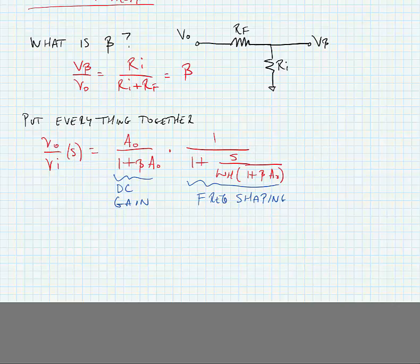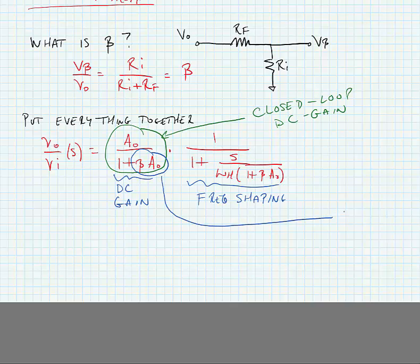From this, we can extract a couple of things. This whole DC term here is called the closed-loop DC gain. The term in the denominator, beta times A sub 0, is called the loop gain. And the term A sub 0 is the DC open-loop gain.